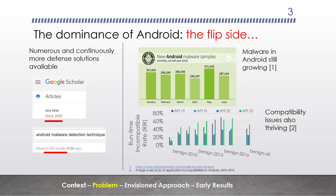However, there is another side of the Android dominance — there is much trouble with Android right now. On the security side, for example, numerous and continuously growing solutions have become available. Just for Android malware detection, in 2020 alone, thousands of papers have been published on this topic according to Google Scholar. However, in the wild, Android malware is not getting fewer. And regarding app quality, compatibility has really been a tremendous issue — roughly 40 to 60 percent of Android apps may not be able to run normally on some kinds of Android devices according to our recent study published last year.